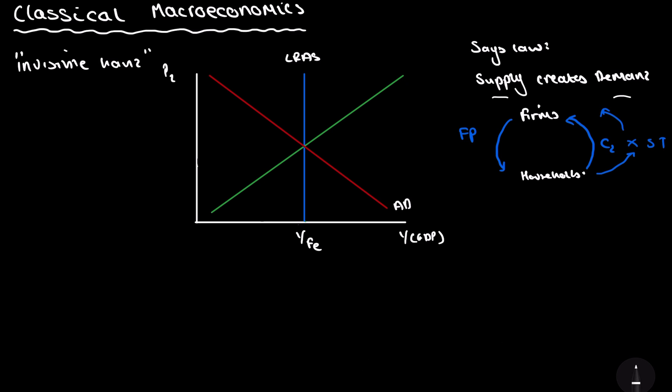And so this next curve, we've obviously talked about AD and LRAS. Next, we'll talk about the short-run aggregate supply. So what I'm going to do now is I'm going to show you what the classical thinking actually is. So we'll do this by showing a shift in aggregate demand.